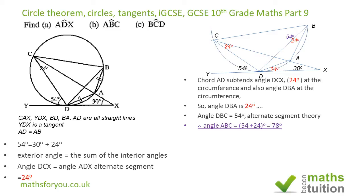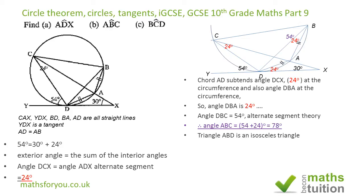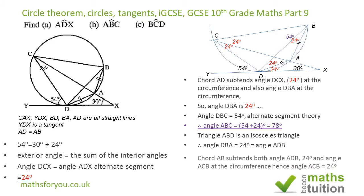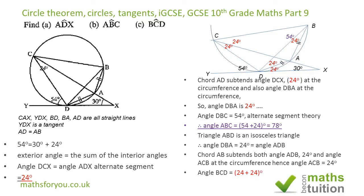Next we need to find angle BCD. Triangle ABD is an isosceles triangle, so since one base angle is 24 degrees, the other is also 24 degrees. Chord BD subtends an angle of 24 degrees at point D, and the same chord subtends angle BCA at point C, so that angle is also 24 degrees. Therefore, angle BCD equals 24 plus 24, giving us angle BCD equals 48 degrees.